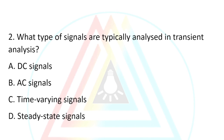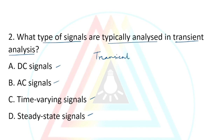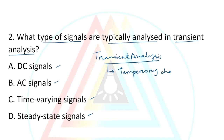Question number two: What type of signals are typically analyzed in transient analysis? Option A, DC signal. Option B, AC signal. Option C, time varying signal. Option D, steady state signal. Transient analysis mainly deals with temporary condition or temporary changes — meaning time changes. So the correct answer is option C, time varying signal.